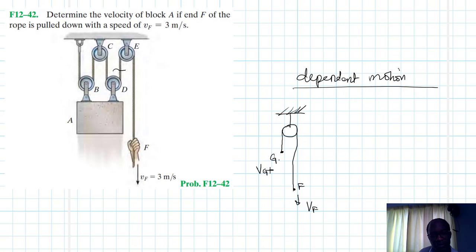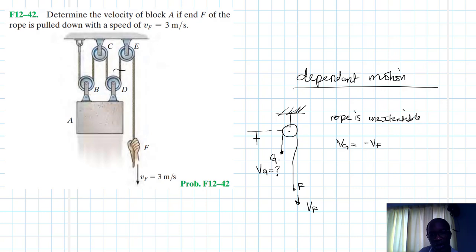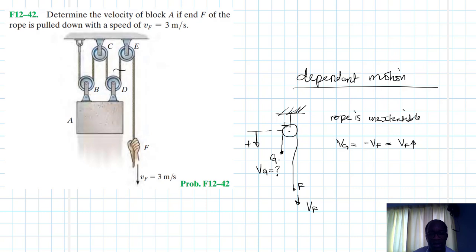What would be the velocity vG at point G if we apply vF? We assume the rope is inextensible — it cannot extend. Therefore vG equals minus vF. Our reference is positive going down, so vG equals minus vF, meaning the velocity at G is equal in magnitude but directed upward, in the opposite direction.